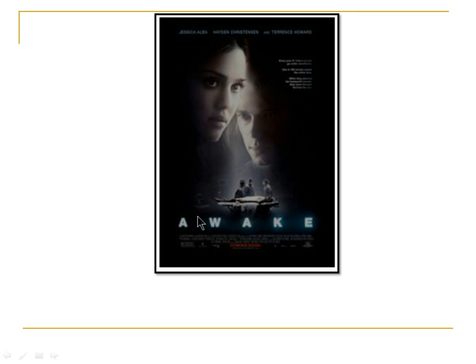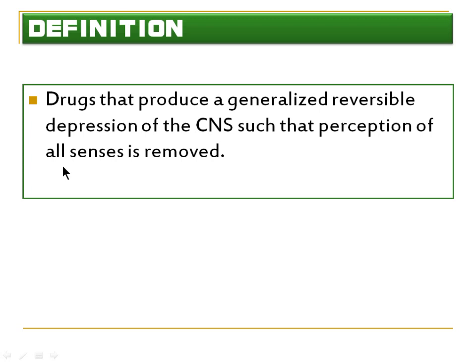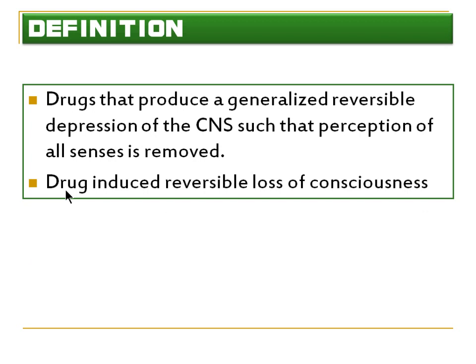Have you seen the movie Awake? This movie irresponsibly claims that 1 in 700 patients under general anaesthesia are awake for the entire surgery — but that is totally false. The definition of general anaesthesia clearly states that general anaesthetics are drugs that produce a generalized, reversible depression of the Central Nervous System such that the perception of all sensation is removed.